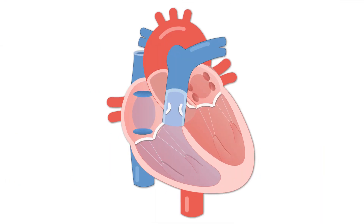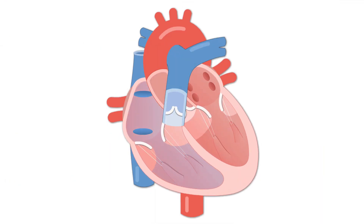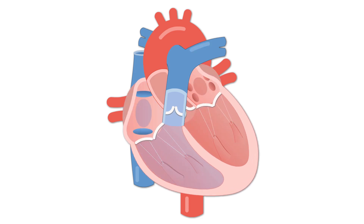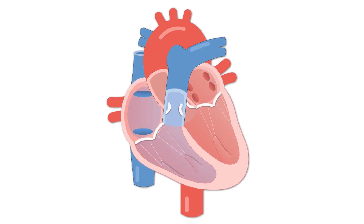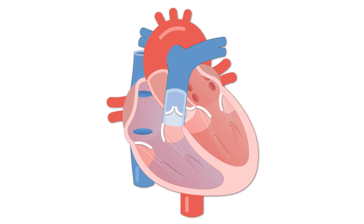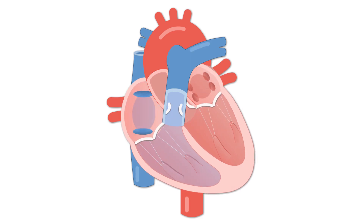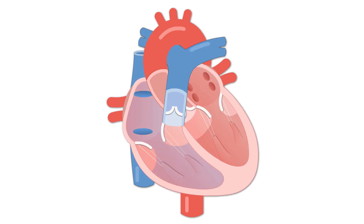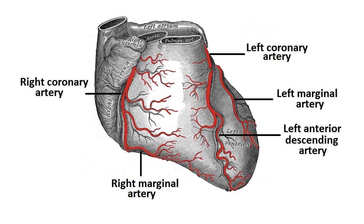The heart is the organ that pumps blood throughout the body to supply oxygen and nutrients to all the organs and tissues in the body. To do so, the heart also requires an adequate blood supply. The heart is supplied by the first pair of arteries to originate from the aorta, the right and left coronary arteries. These arteries branch out to form an arterial network around the heart muscle, called the coronary circulation.